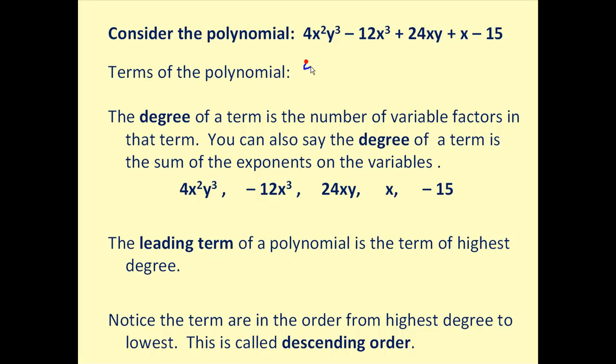So the first term would be 4x²y³. The second term, remember the original definition of a polynomial was the sum of monomials, so this is the same as plus a negative 12x³. So the term is negative 12x³. I just think that you take the sign with it. If it's a minus sign, treat it as a negative.